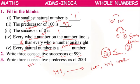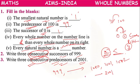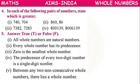Write 3 consecutive predecessors of 2001. Consecutive means immediate — so immediately before 2001 are: 2000, 1999, and 1998.